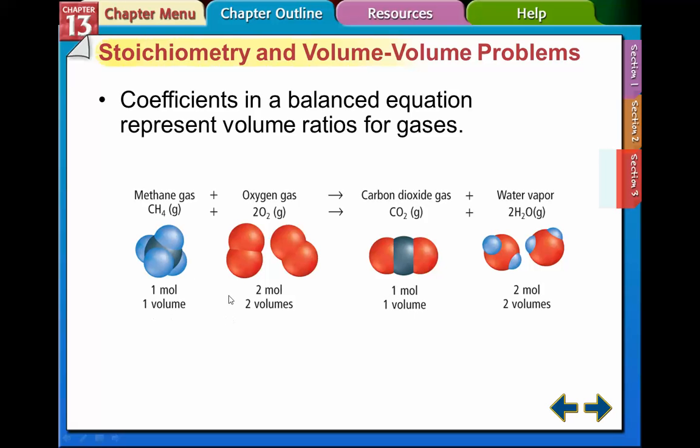So if I have 1 liter of methane gas, I'm going to produce 2 liters of water vapor. If I have 10 liters of oxygen, that means I'm going to produce half as much carbon dioxide and the same amount of water.